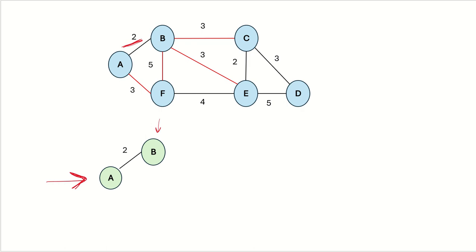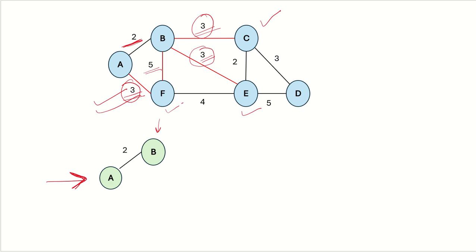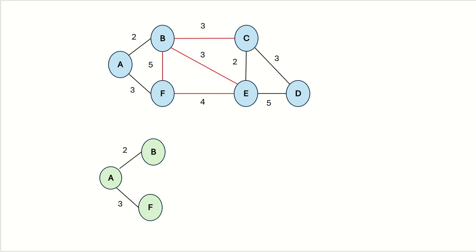All the edges now in the priority queue are: edge AF connected to A, and the edges connected to B. Out of these, we choose the edge with minimum weight. We see that BC, BE, and AF all have the same minimum weight, and the vertices C, E, and F are not yet in the MST, so we can choose any of these three. Let's say we randomly choose edge AF and add it to the MST.